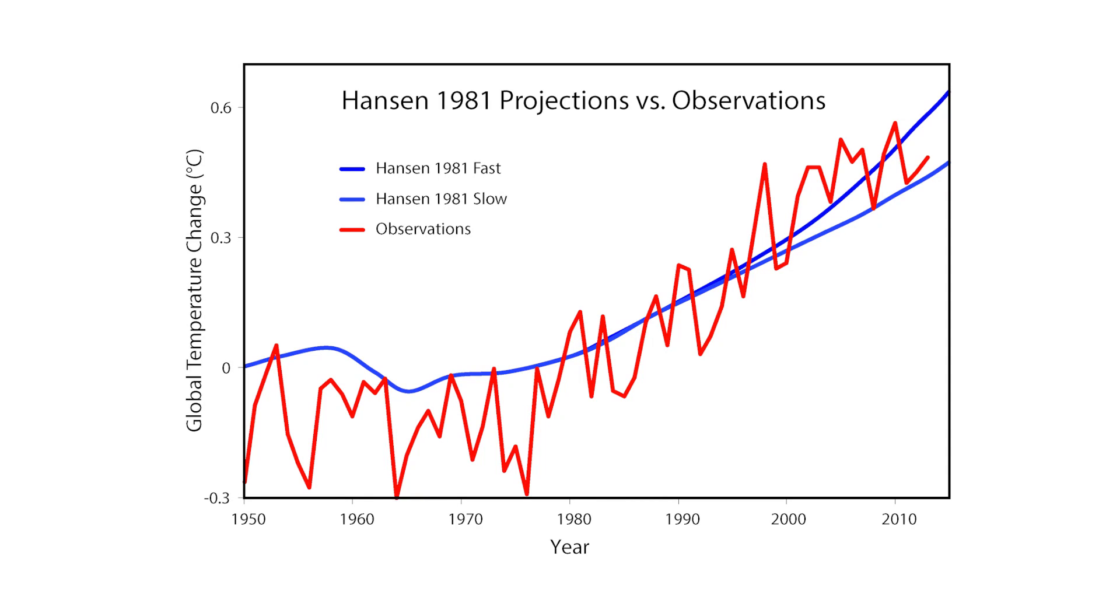In 1981, NASA climate scientist James Hansen had developed a somewhat more detailed model of the Earth's climate. He projected that between 1981 and 2015, the planet would warm about 0.5 degrees Celsius. In actuality, the planet warmed about 0.6 degrees Celsius during that time, so Hansen's model was remarkably close with that projection.